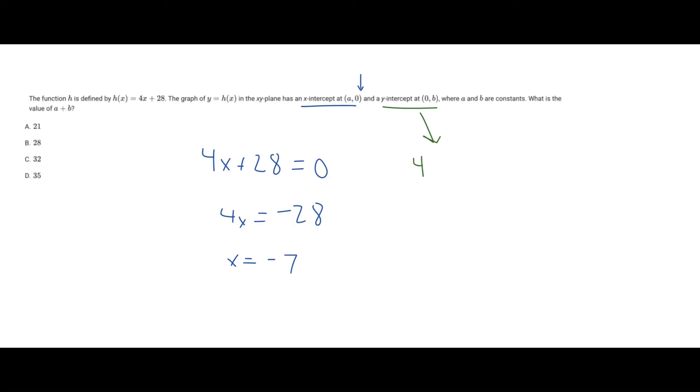So we'll put 4 times 0 plus 28. Well, 4 times 0 is just 0, so if you add 28 to 0, you're going to get 28 as your final answer. So 28 will be equivalent to our y-coordinate.